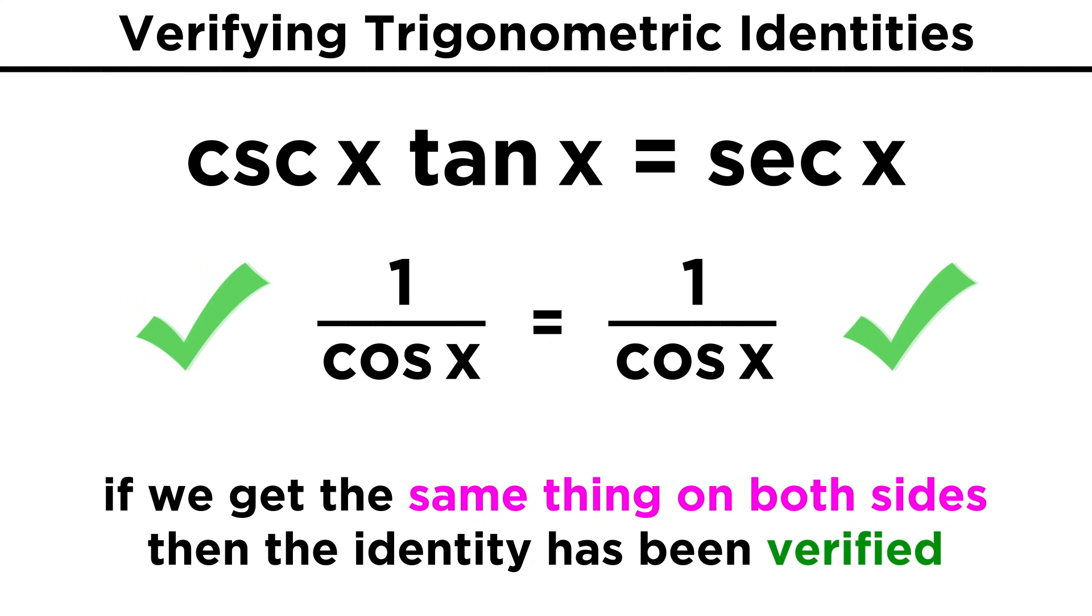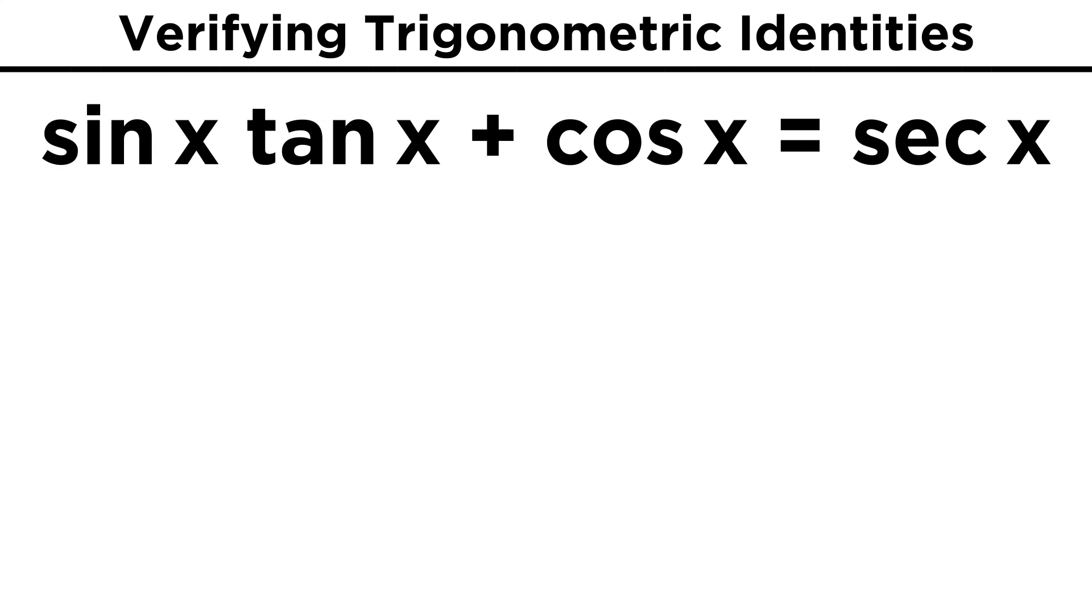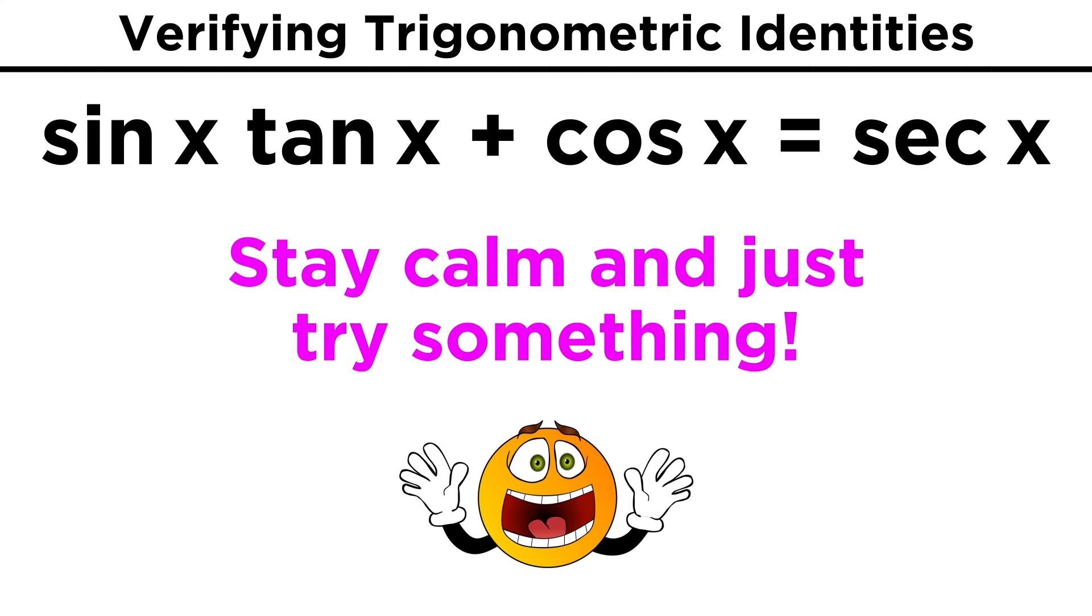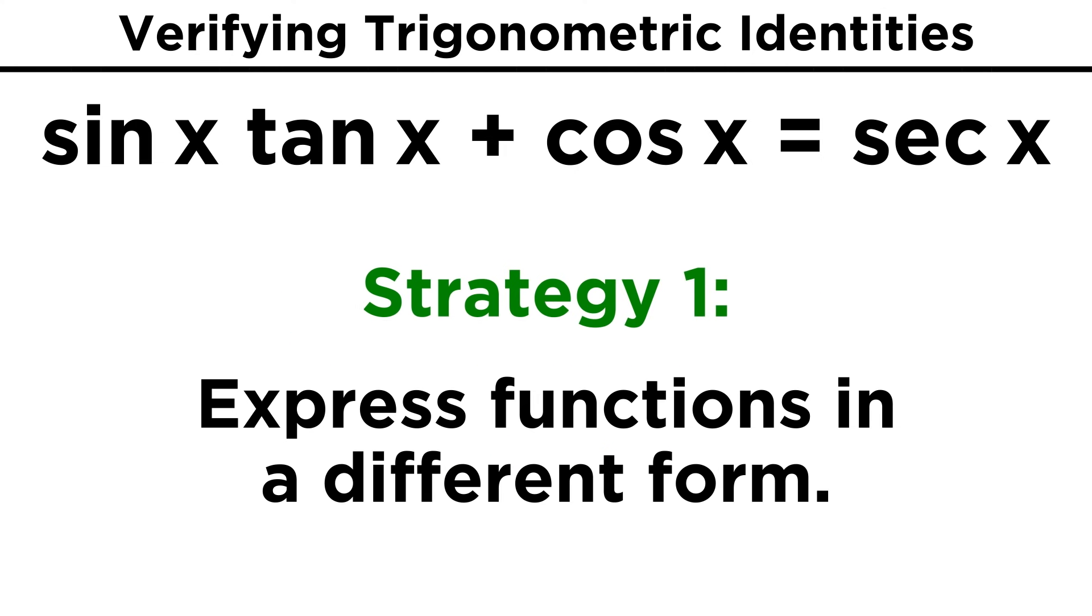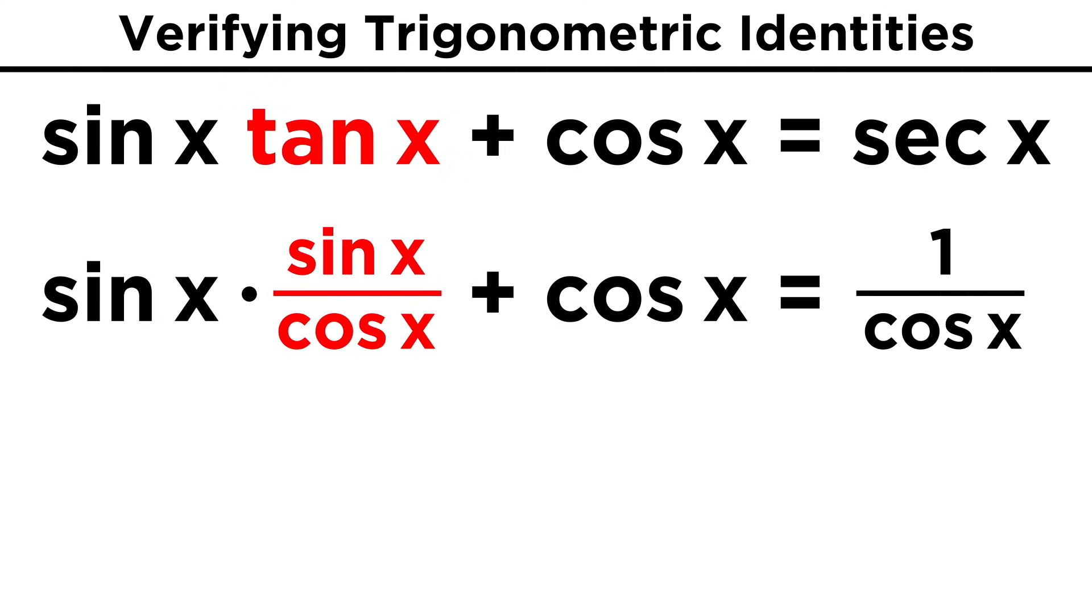That one was easy, but it won't always be this simple. What about something like this, where sine x tangent x plus cosine x equals secant x. Now let's not panic, the easiest thing we can always do first is express individual trig functions as something else. That means we rewrite tangent as sine over cosine, and secant as one over cosine.